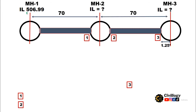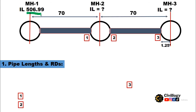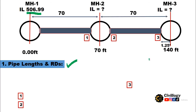The invert level of the first manhole is given as 506.99. First of all we will find the pipe lengths and RDs. As you can see, the distance given is from center to center of the manhole but the pipe length is not given, so we will have to calculate the pipe lengths and RDs. The start point of the sewer line is at RD 0.00, the center of the next manhole is at 70 feet, and the third manhole is at 140 feet, so the RD there is 140 feet.